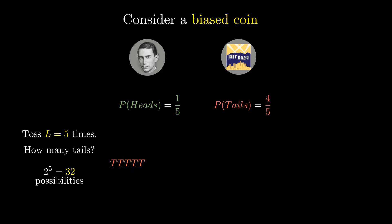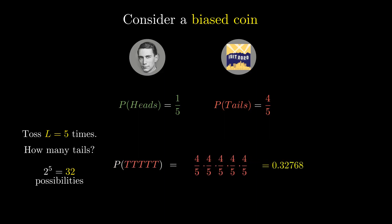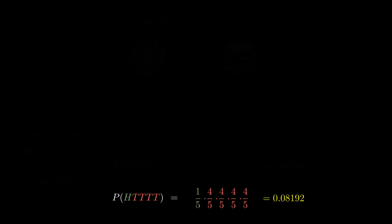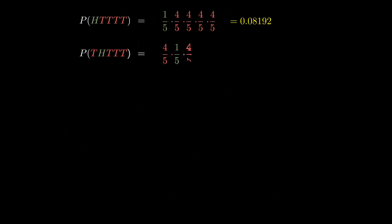Since the probability of tails is 4/5 and the tosses are independent, we simply multiply 4/5 five times to obtain the probability. Similarly, the probability of some other sequence can also be obtained by multiplying the corresponding probabilities. When we compute the probability of a sequence, only the proportion of heads and tails matter, not their relative position.